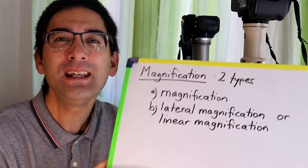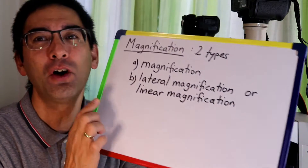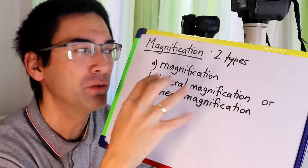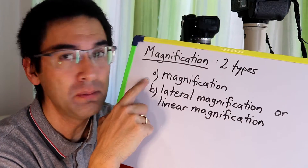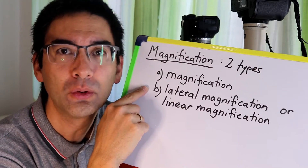Welcome. In this video I want to talk about magnification — it's an important topic in the field of microscopy, but there are a lot of misconceptions about it. We first have to know what magnification is, because there are actually two different types: one is simply called magnification, and the other is called lateral or linear magnification, and they are very different.